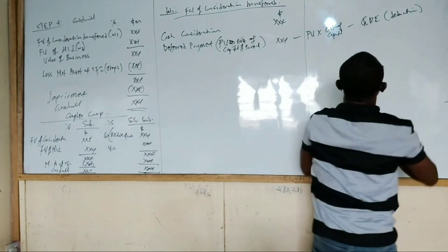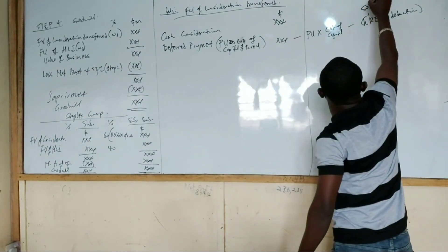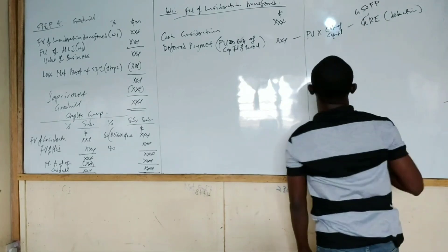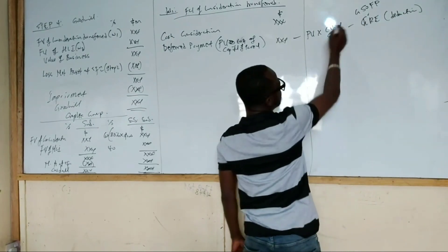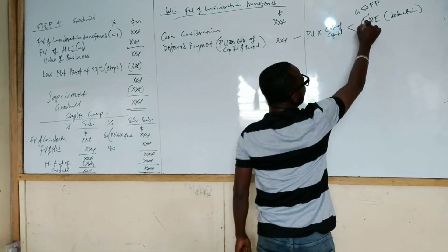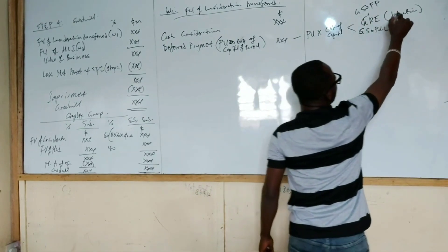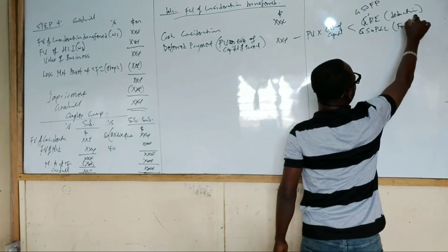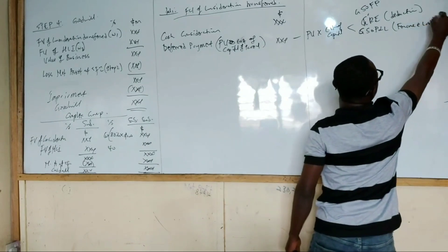It will go to group retained earnings if we are preparing statements of financial position. But if we are preparing group statements of profit or loss, it will be taken to finance costs in the income statement.